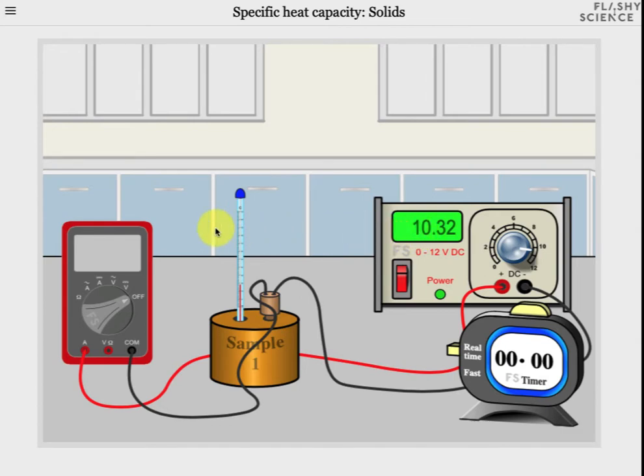To measure the electric current passing through the heater, click and drag this dial on the DMM until it's in this position showing DC current. The power applied to the heater can now be calculated by multiplying the value of the current by the value of the potential difference.